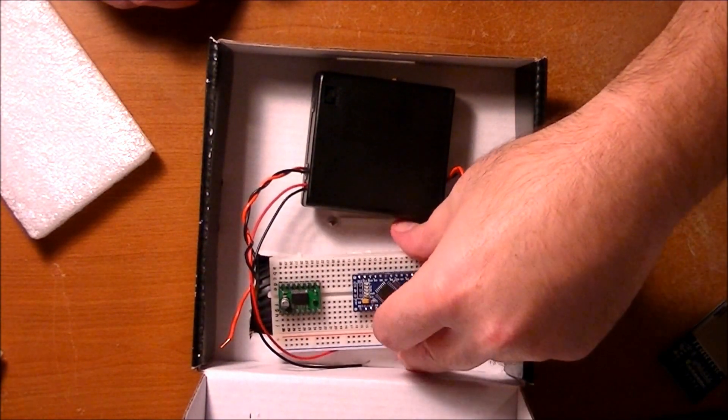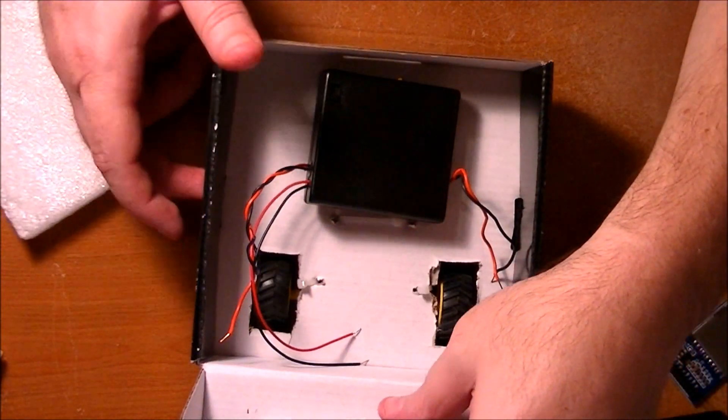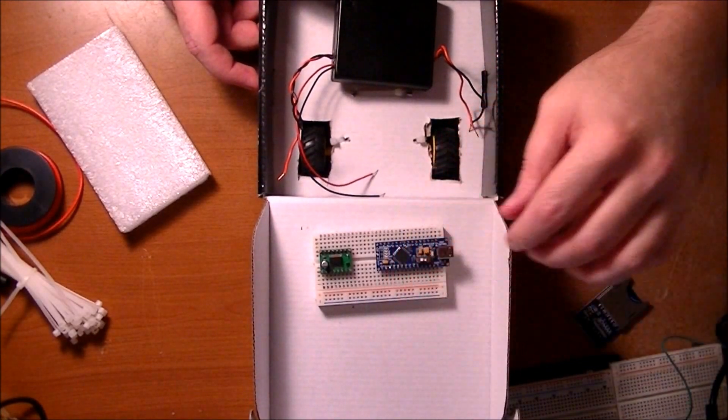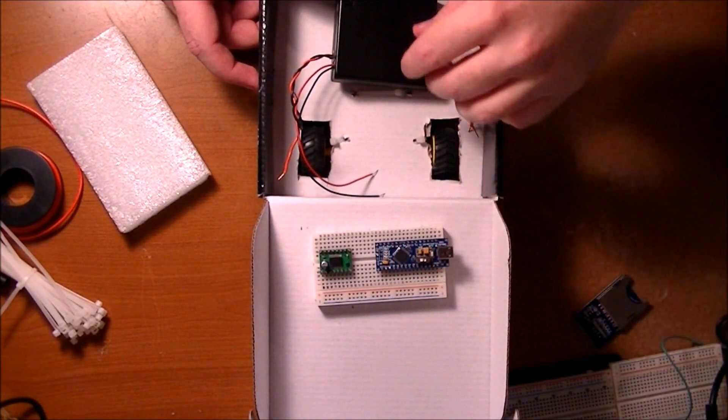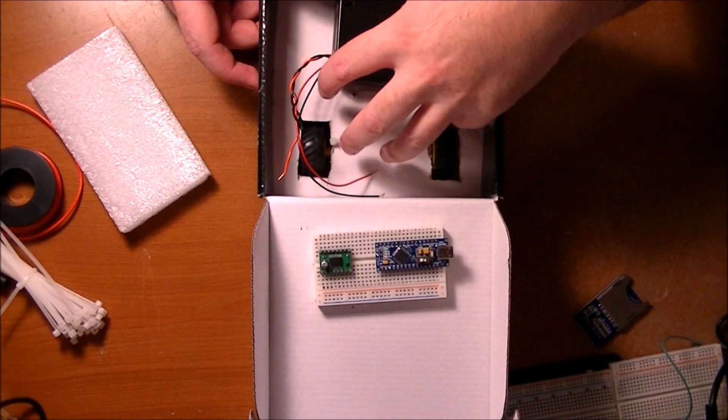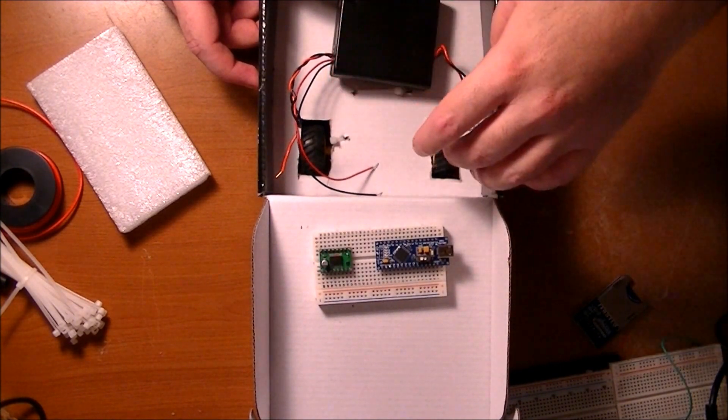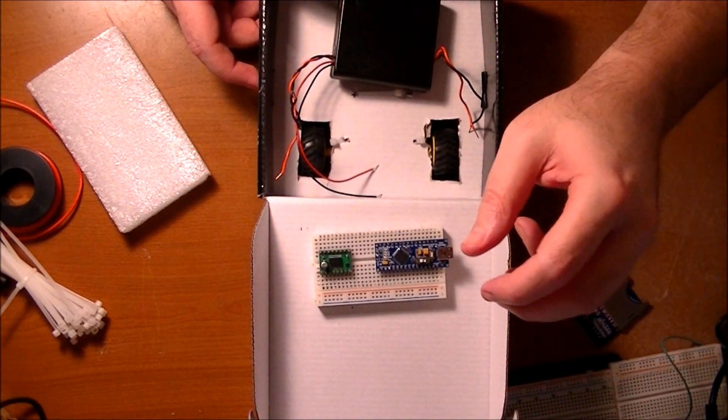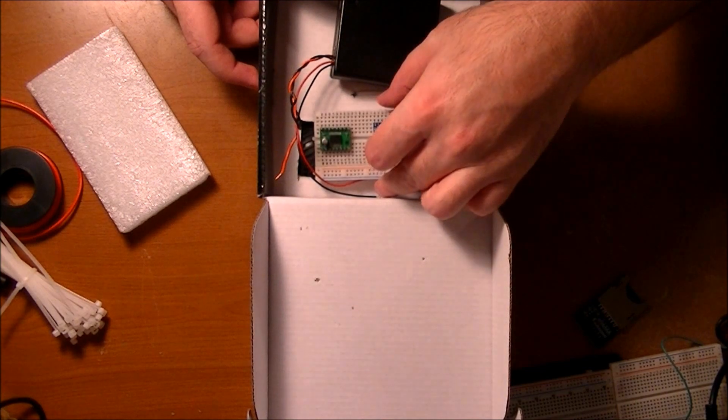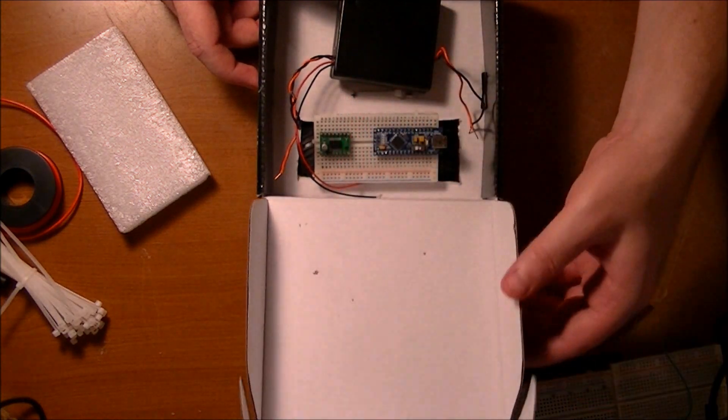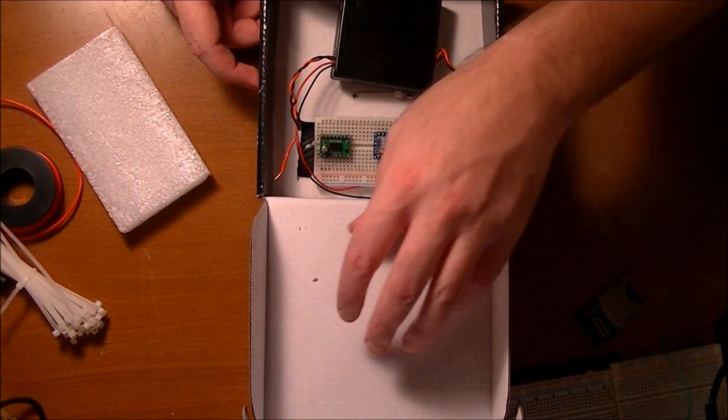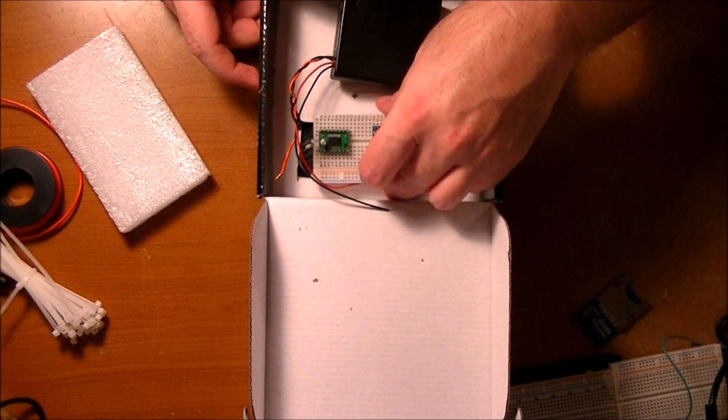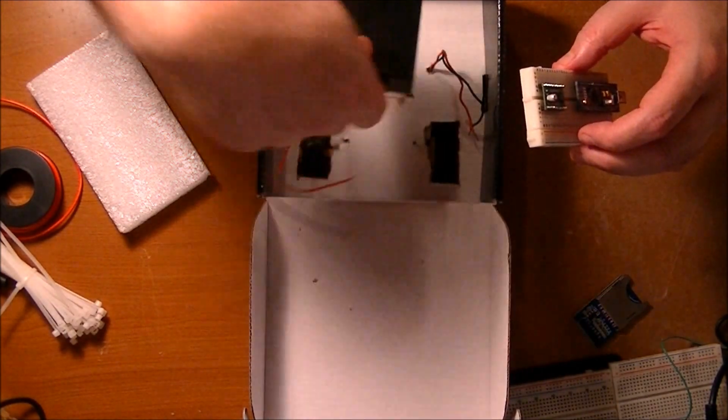I thought about putting it up top here but I already know a lot of connectors are going to be going from over here where the power and the motors are over to the board. So every time I open the box it's going to be stretching wires. I'd rather keep it down here and just have a few wires going to like an LCD in the box lid. So what I'm going to do is I am going to mount this here.